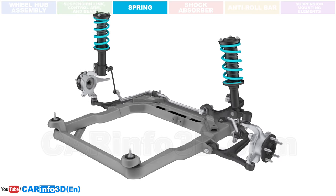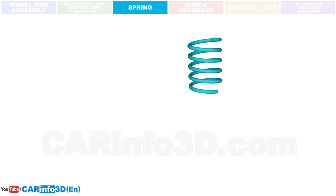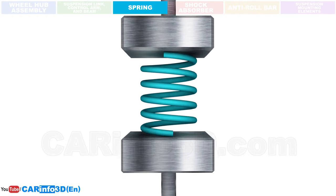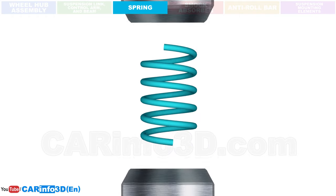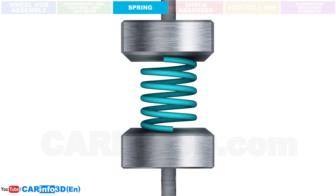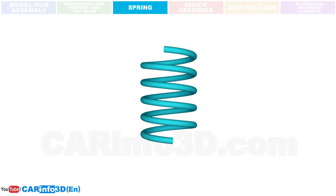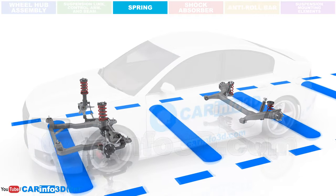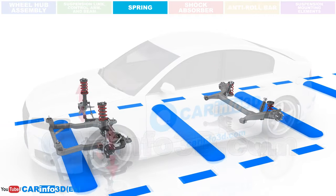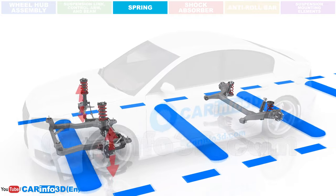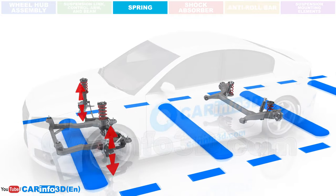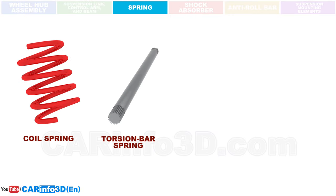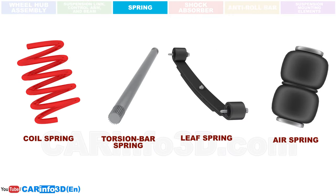Springs. Spring deformation occurs as a result of outside forces. When the outside influences cease, they take on their original shape. Car springs primarily absorb and transmit vertical forces that act on the wheels, and their deformation allows smoothing down the impacts of uneven terrain on the vehicle. Apart from coil springs, some designs use torsion bar springs, leaf springs, and air springs.